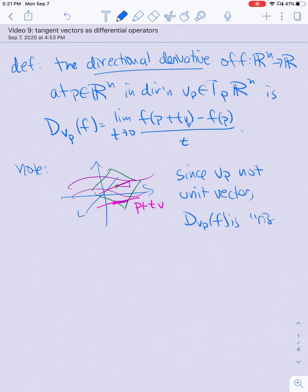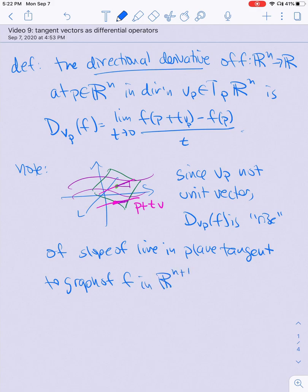However, since v_p is not necessarily a unit vector, D_{v_p} at f is just the rise part of the slope of the line in the plane tangent to the graph of f in R^{n+1} at the point (p, f(p)) above the parameterized line in R^n p plus tv at p.